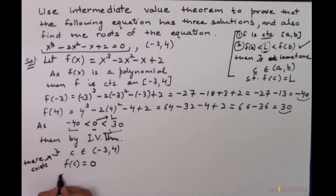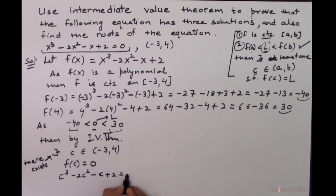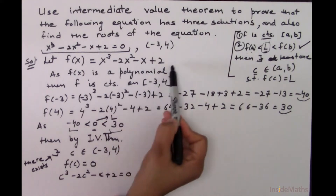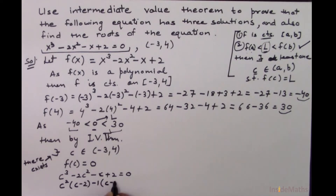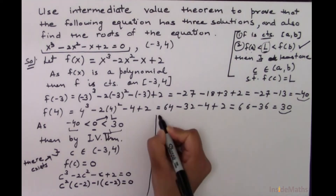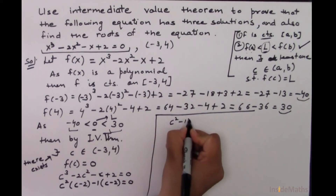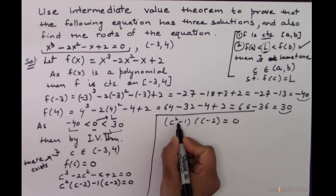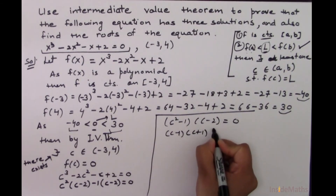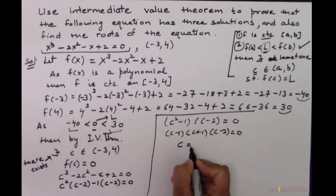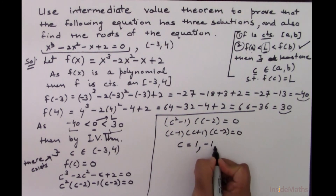That means c cubed minus 2c squared minus c plus 2 equals 0. Using the value of f of x with c in place of x, I can factor: taking c squared from the first two terms gives c squared times c minus 2, and taking out minus 1 from the last two terms gives minus 1 times c minus 2. So this becomes c squared minus 1 times c minus 2 equals 0, and factoring further gives c minus 1 times c plus 1 times c minus 2 equals 0. Therefore c equals positive 1, negative 1, and 2.